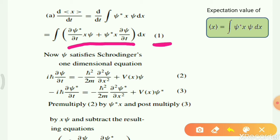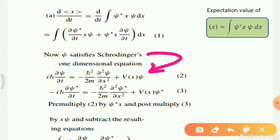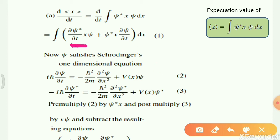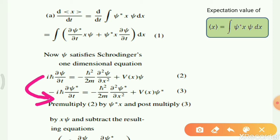To solve this equation we use the Schrödinger equation: iota ℏ (d psi/dt) = minus (ℏ²/2m)(d²psi/dx²) + V(x)·psi. Now for the term d psi/dt, we can see this from the Schrödinger equation. We also need the conjugate term, so we take the complex conjugate of the Schrödinger equation — where iota becomes minus iota, and psi becomes psi-conjugate.